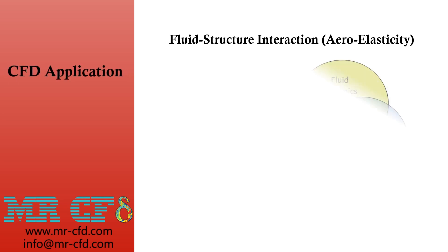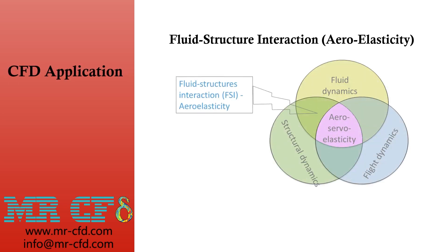As shown in the chart, aeroelasticity is defined by the interaction of three parts, not only fluid dynamics and structural dynamics. In aerospace projects, for example when simulating an airplane performing a roll maneuver, you need to deflect control surfaces, which involves flight dynamics planning as well. When fluid dynamics, structural dynamics, and flight dynamics all intersect, we have a field called aeroservoelasticity, which uses FSI to understand how complex movements affect the fluid around the airplane and its structure.